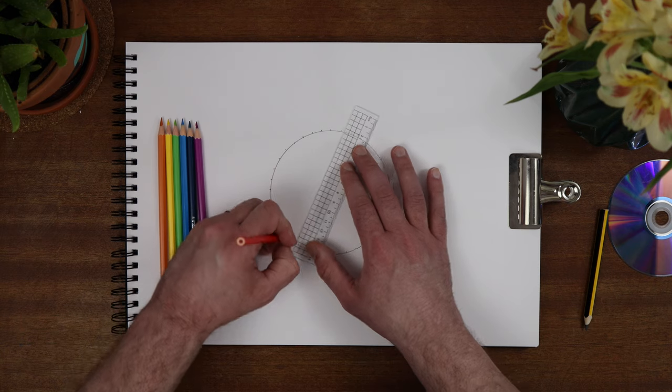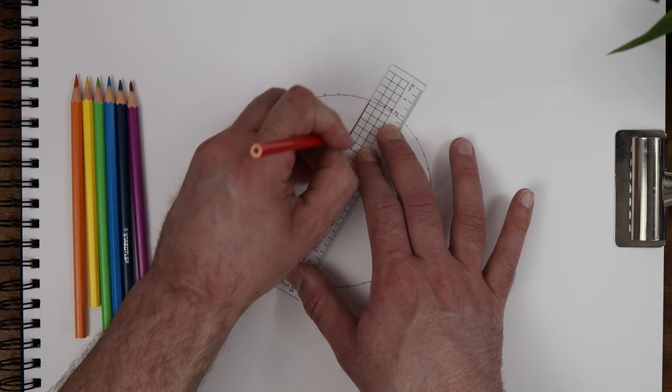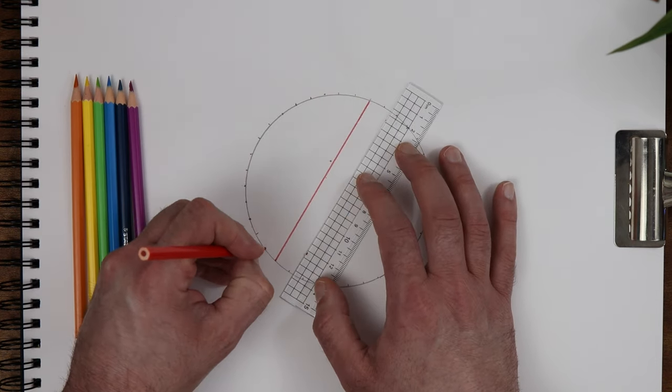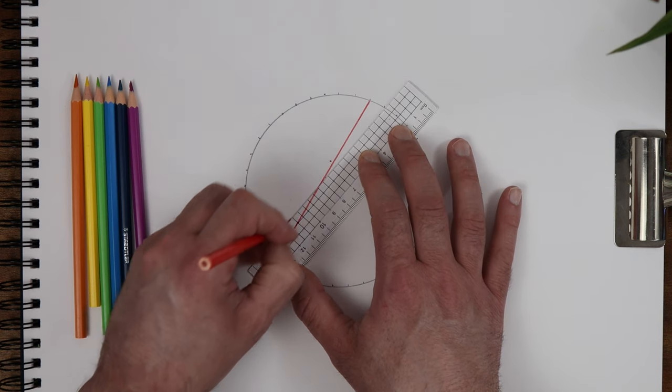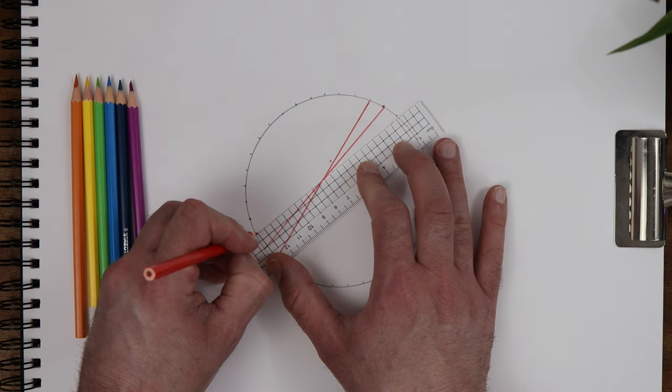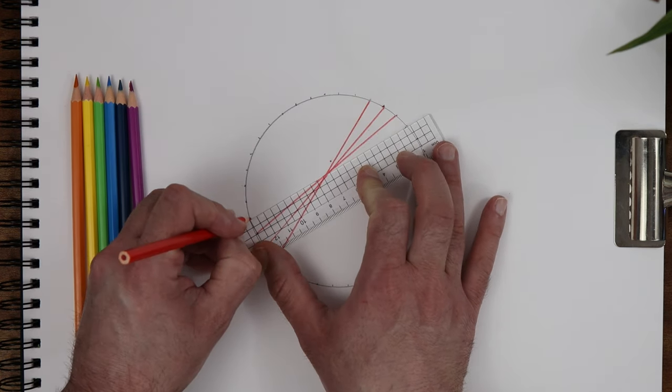Choose any starting point then draw a line to any other points on the circle. Then move up one point and down one point on the other side then draw another line. Continue this pattern all the way around the circle changing your colors as you go.